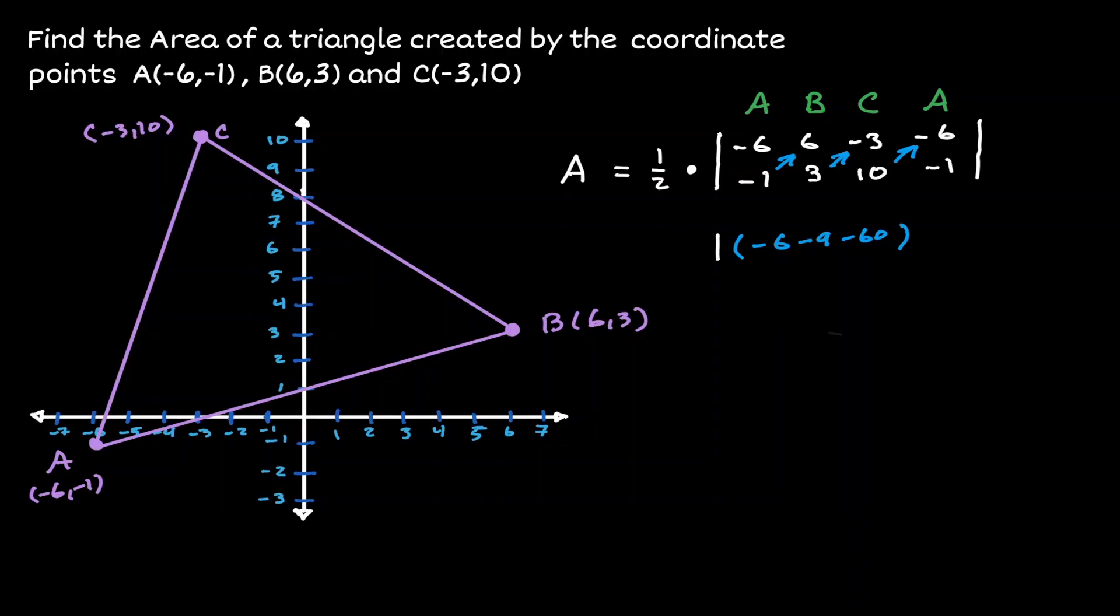And whatever result we get from there, we're always going to subtract it, and what we're going to subtract is a multiplication of the opposite direction. Now we're going to get the value of -6, and we're going to multiply it diagonally in a negative direction, which in this case is positive 3, that's going to give us -18.